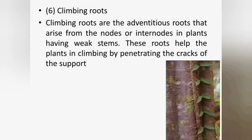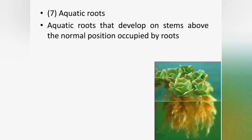Climbing roots are adventitious roots that arise from the nodes or internodes in weak-stemmed plants. These roots help the plants in climbing by penetrating the cracks of the supporting portion. Examples include pothos, piper and vanilla. Aquatic roots develop on stems above the normal position occupied by roots. Instead of anchoring in the soil, aquatic plants attach their roots under the water or on moist soil. Examples include water lilies, Pistia and Myriophyllum.